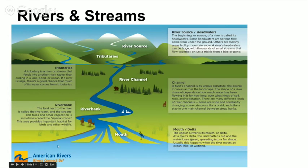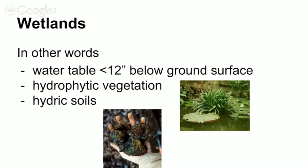And then at the very bottom you have the mouth of the river or the delta. A wetland has a water table that is less than 12 inches below the surface of the ground, so the soil must be saturated. It must have hydrophytic vegetation, which is just vegetation that is adapted to living with its roots wet, and hydric soils, which just means soils that have formed while the ground was flooded. So those are our three types of aquatic ecosystems.